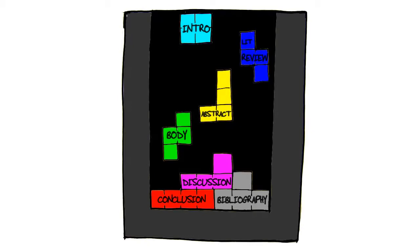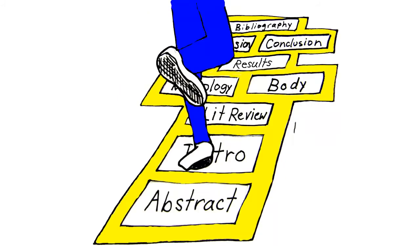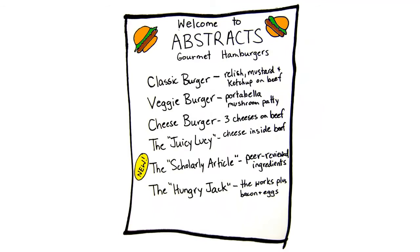However, in order to save time and understand what the author is trying to say more quickly, it's more efficient to hop around the article in a different order. Start with the abstract. An abstract is like a menu description that tells you what to expect from the article.